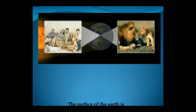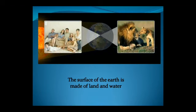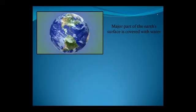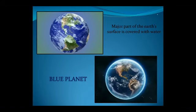The surface of the Earth is made up of land and water. People, plants and animals live on land. The major part of the Earth's surface is covered with water. It is also called a blue planet. Planet Earth is very important for the survival of all living beings.